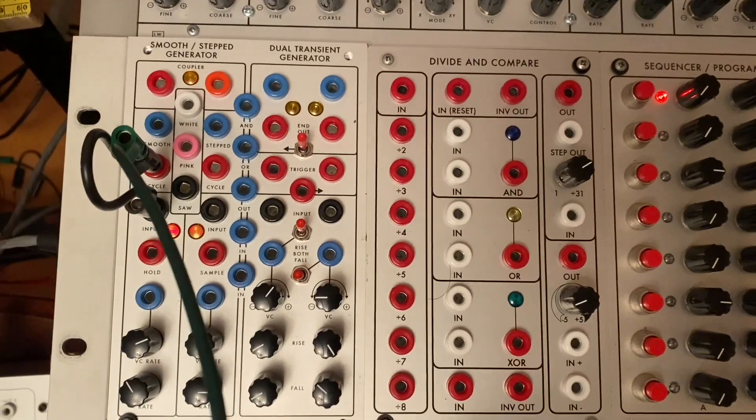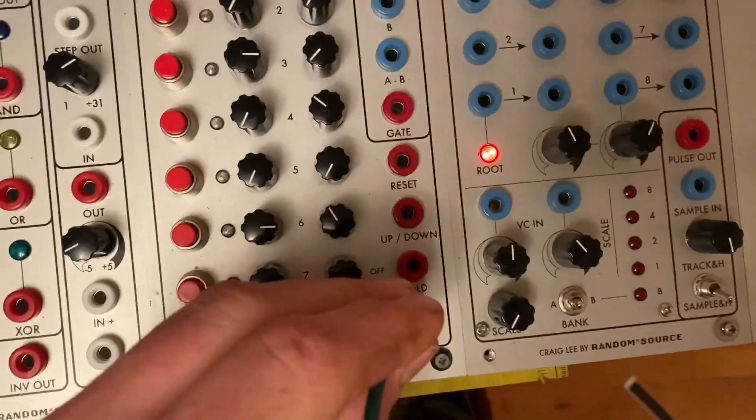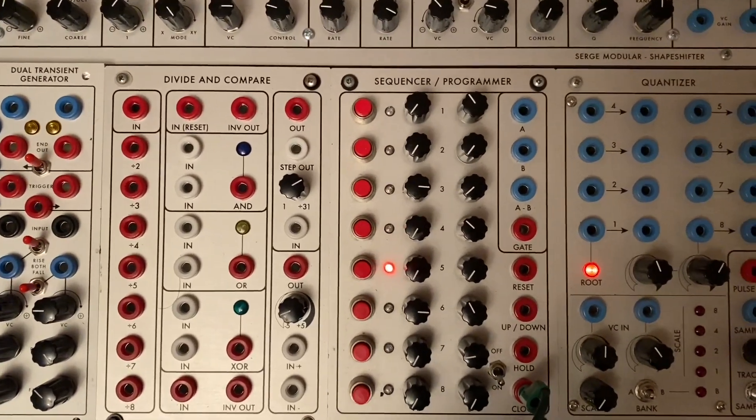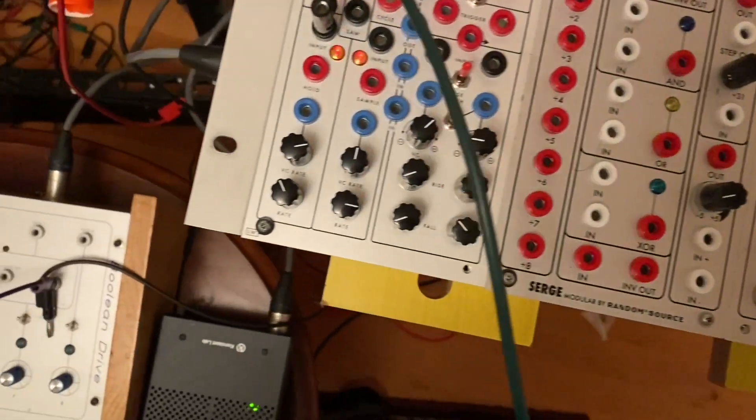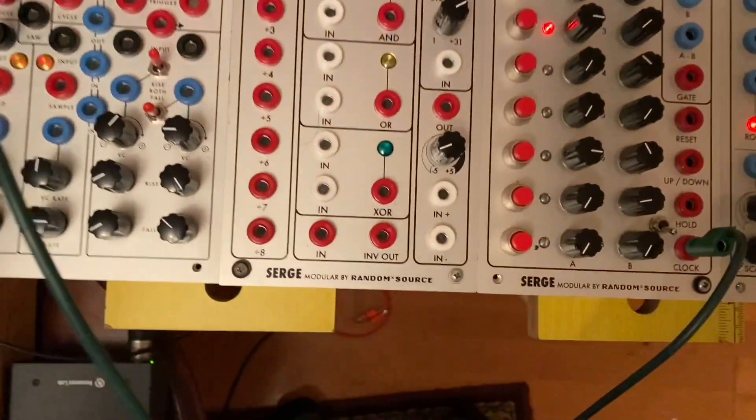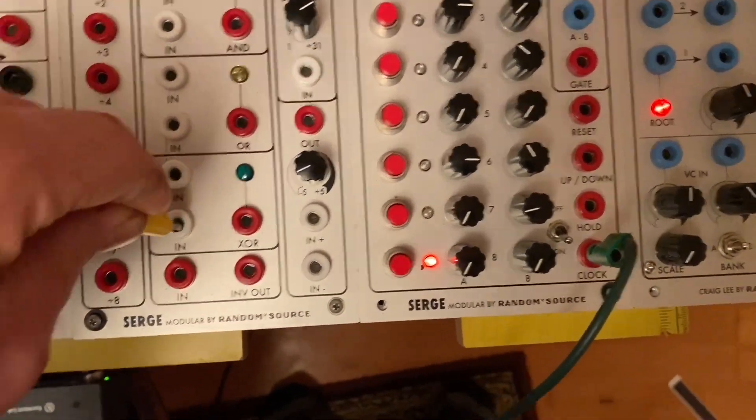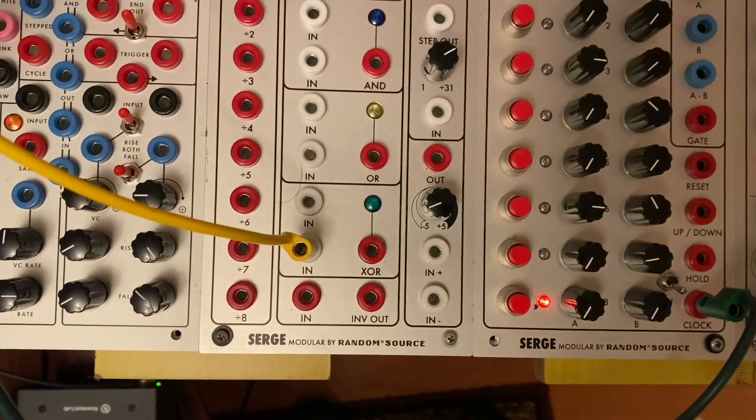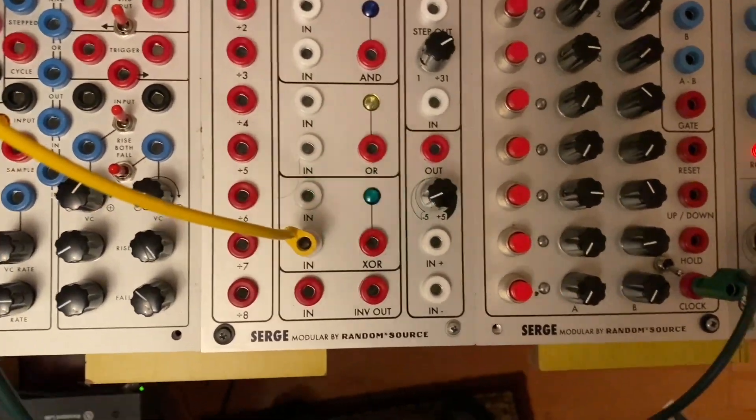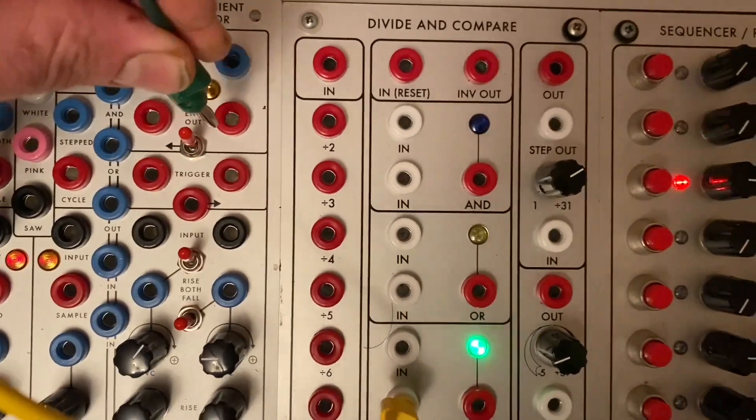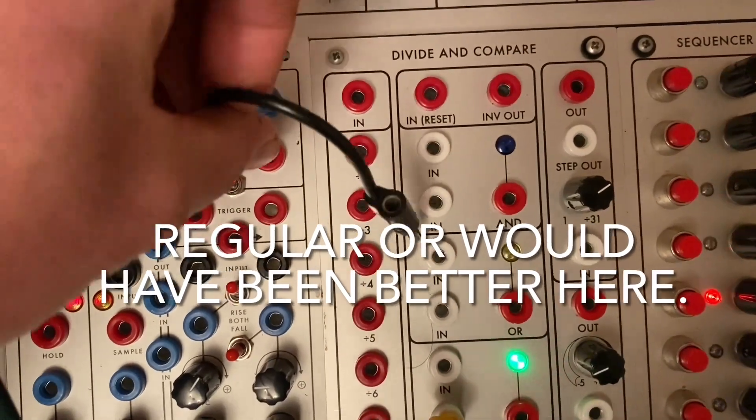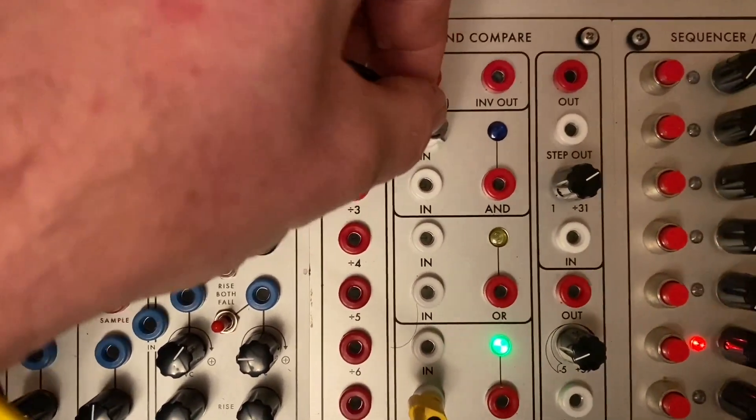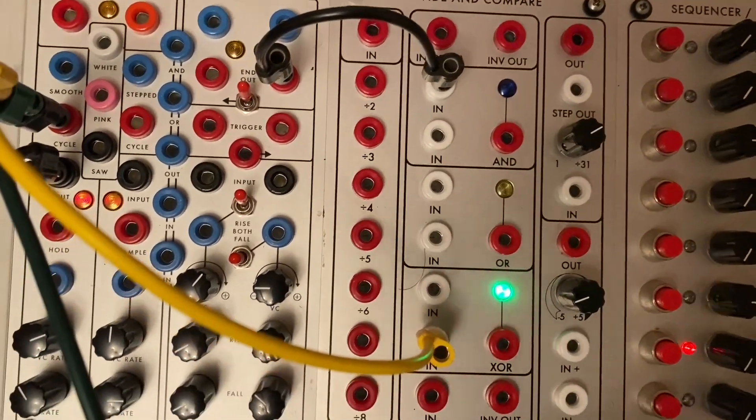This next technique may take a little bit longer to get one's head around, but I use it in almost all of my patches. We'll start by patching the smooth side of a smooth stepped generator to oscillate, and that becomes a clock source for our sequencer. We will then also patch the cycle output of the smooth generator into one of the inputs of the exclusive OR module. It could be the regular OR as well. There are subtle differences, and you'll certainly hear more pronounced differences at audio rates.